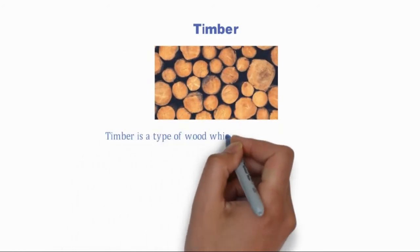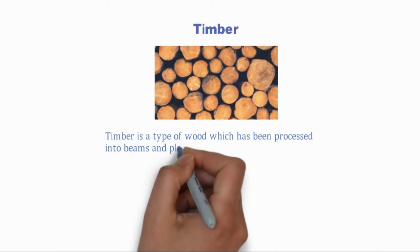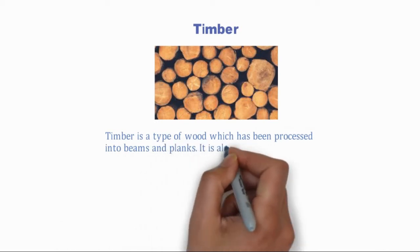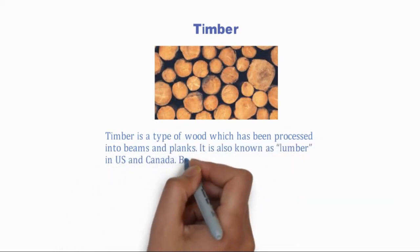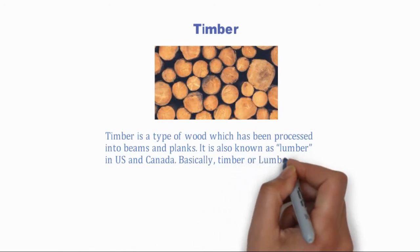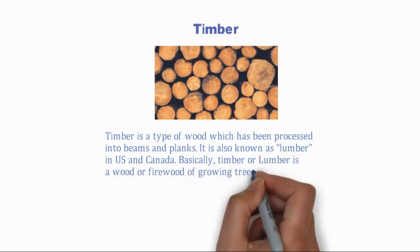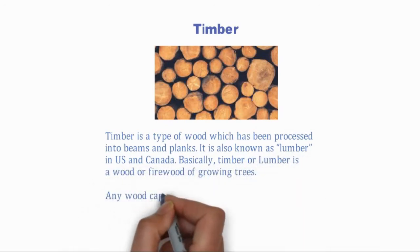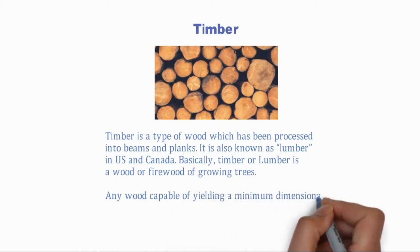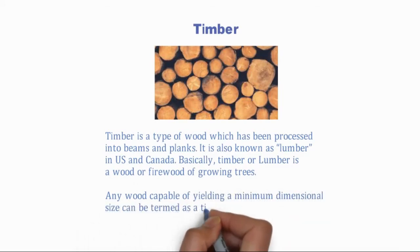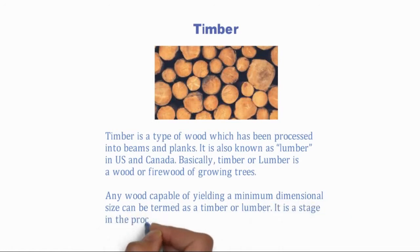Timber is a type of wood which has been processed into beams and planks. It is also known as lumber in the US and Canada. Basically, timber or lumber is a wood or firewood of growing trees. Any wood capable of yielding a minimum dimensional size can be termed as timber or lumber.